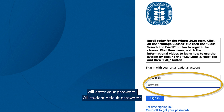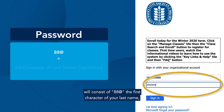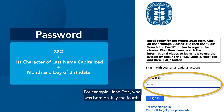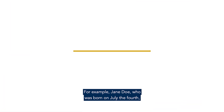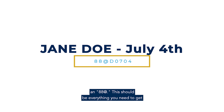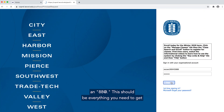The second box is where you will enter your password. All student default passwords consist of '88@' followed by the first character of your last name capitalized, and the month and day of your birth date. For example, Jane Doe born on July 4th — her default password would be 88@D0704. So even if your ID number begins with a 900, your default password will still begin with 88@.